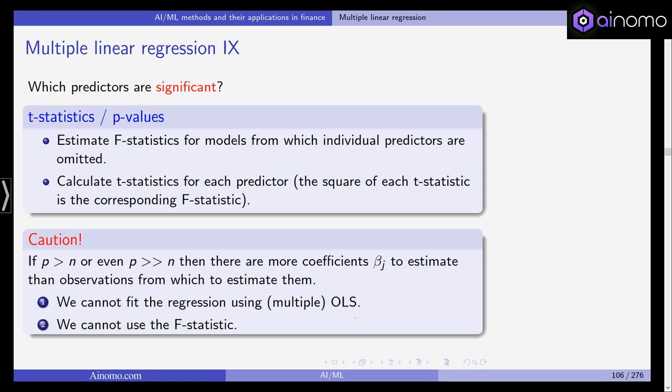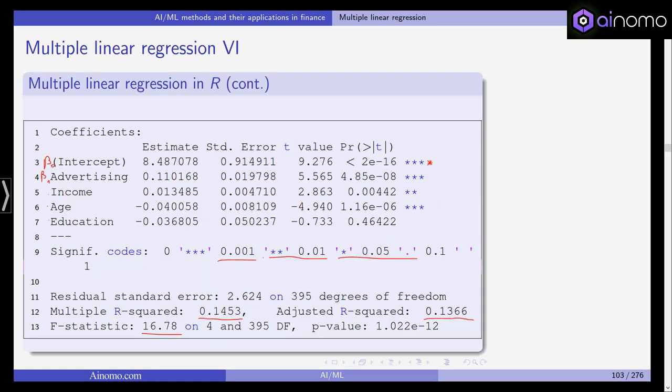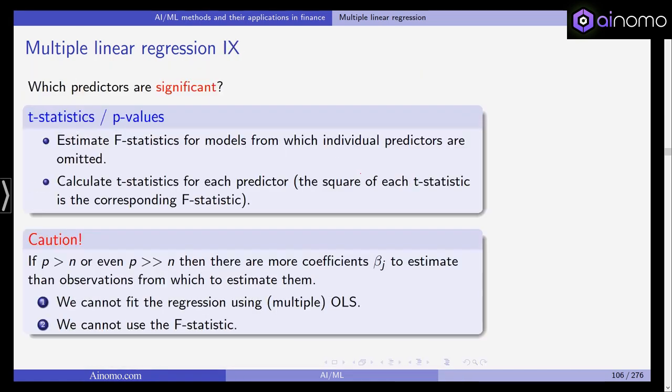Which predictors are significant? We've seen in the R output that not all predictors have an insignificant coefficient. Which predictors are significant? Again, as in simple linear regression, we estimate t-statistics and p-values. We calculate t-statistics for each predictor. The square of each t-statistic is also the corresponding F-statistic. Based on those t-values we can convert them into p-values. Three out of four predictors are significant in our regression.